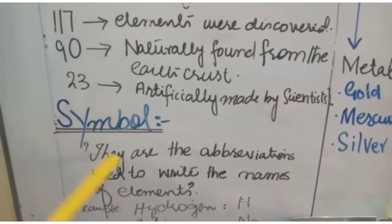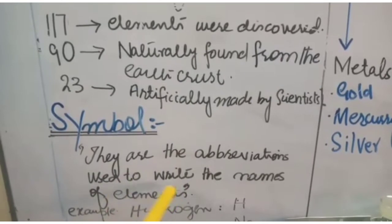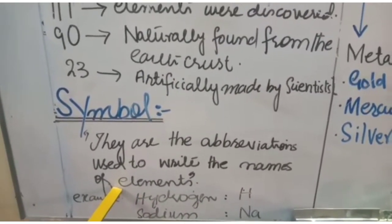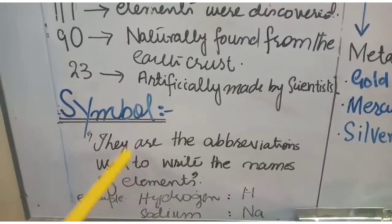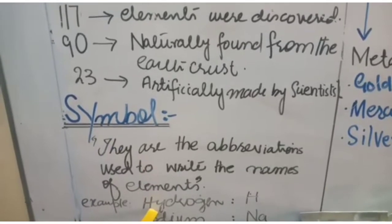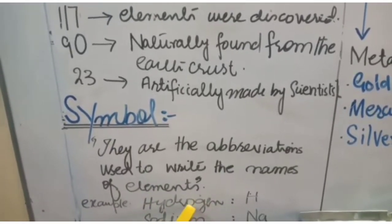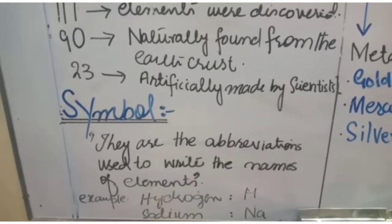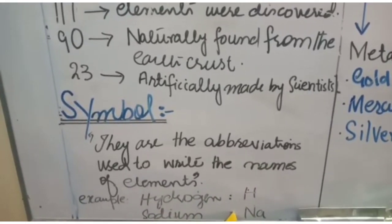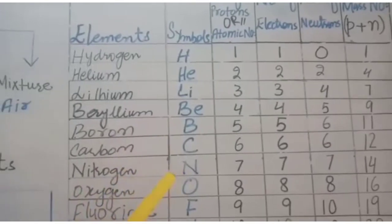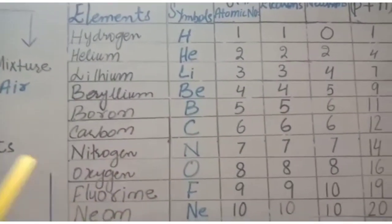Symbols are the abbreviations used to write the names of elements. For example, hydrogen — the name has 8 letters, but the symbol is only H. Sodium has the symbol Na. You should remember the first 20 elements and their symbols. These symbols are very important.